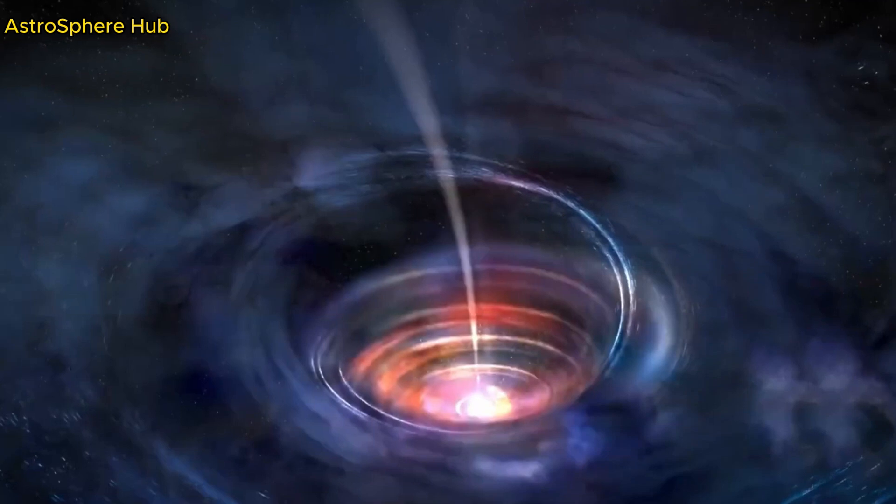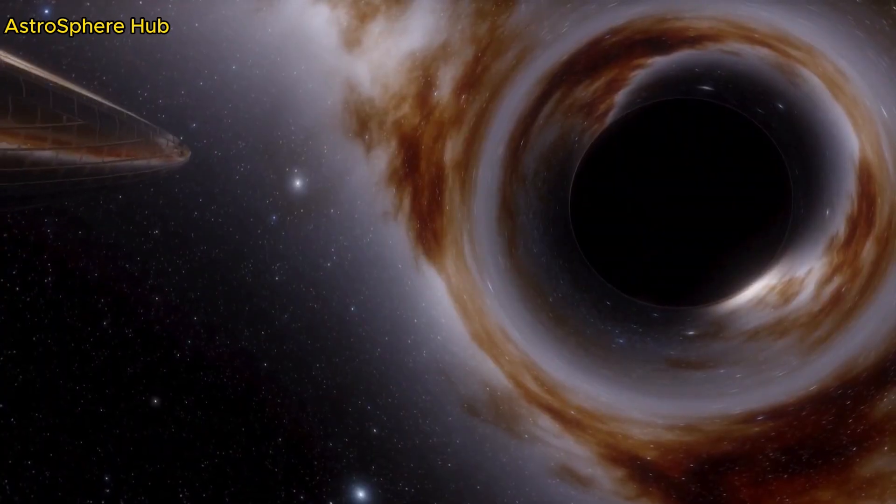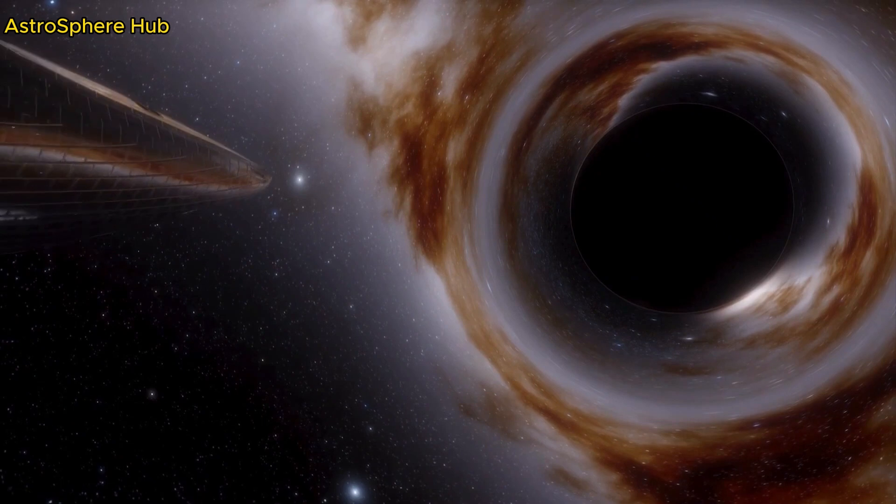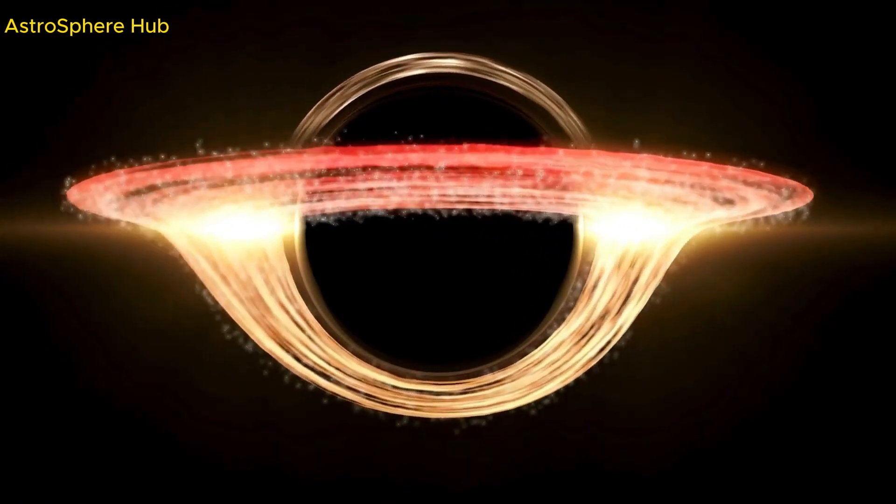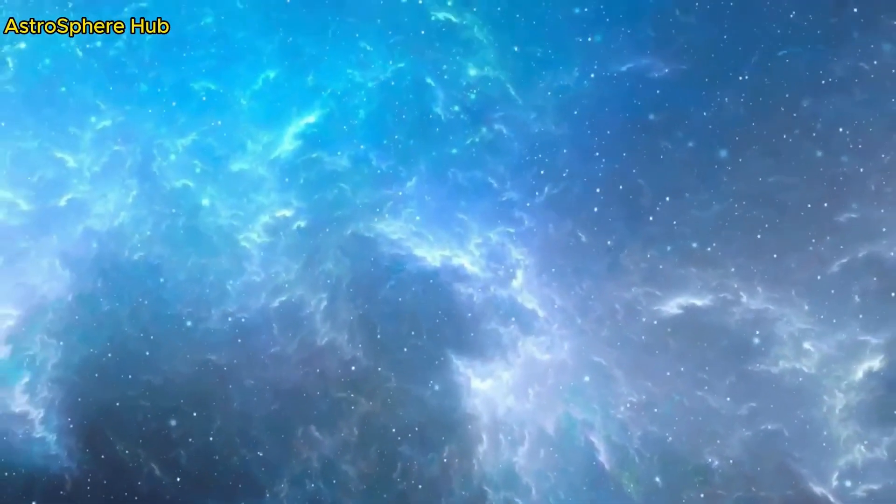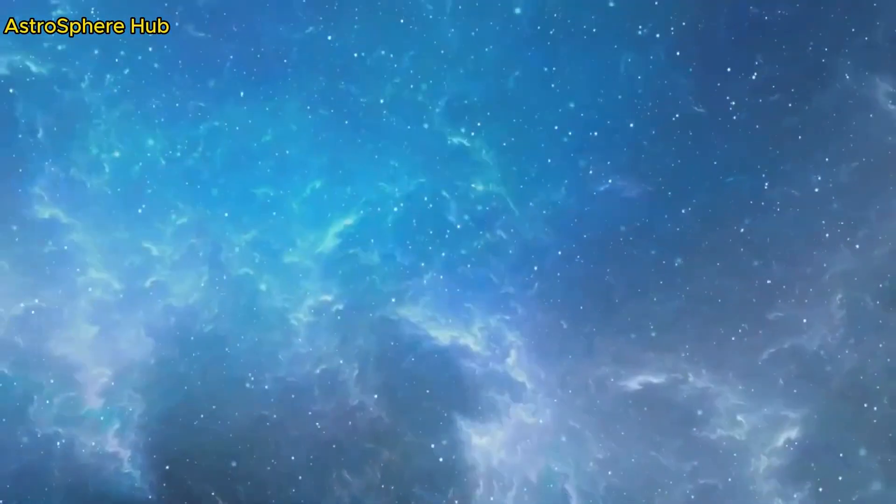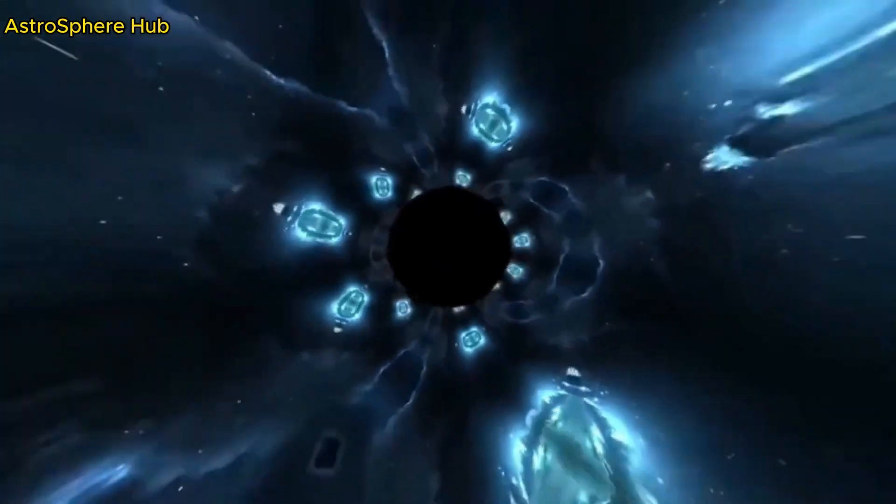However, space-time gets way more complicated when you have a mass which rotates. And so far, we only know about the existence of black holes that have angular momentum, or a spin. They form from the collapse of rotating massive stars, and as matter collapses, the rotation is conserved, leading to the formation of a spinning black hole.